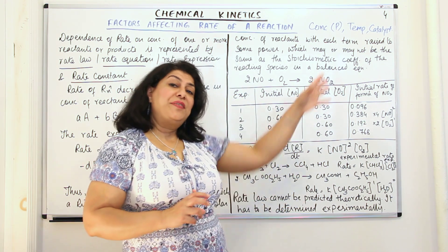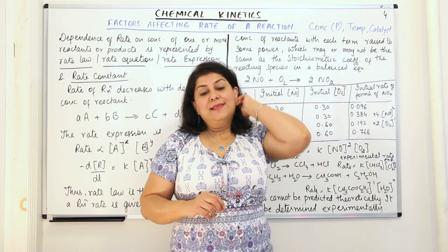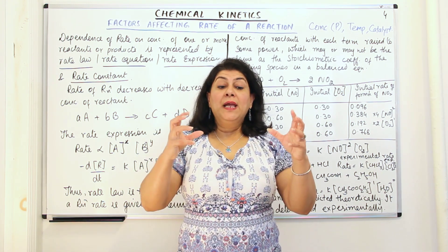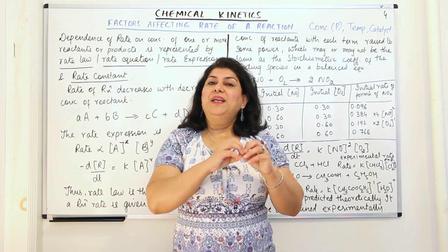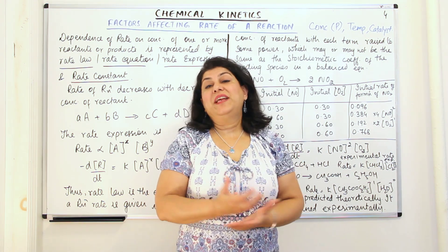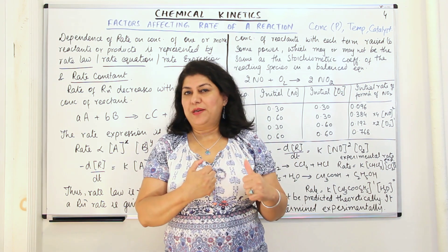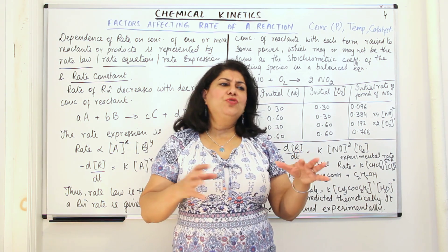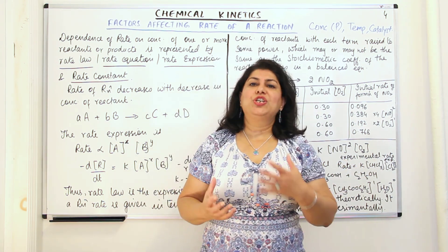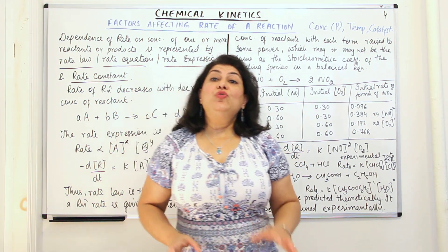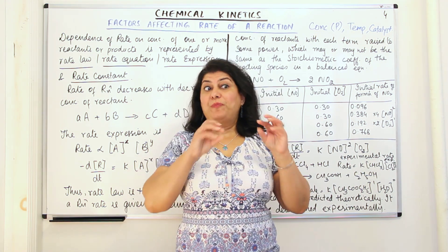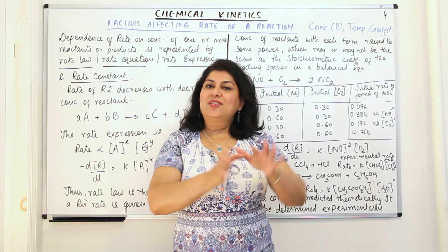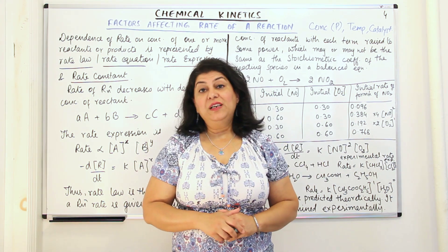The third factor is the presence of a catalyst. A catalyst is a substance whose presence helps increase the rate of a reaction. Such a substance itself does not participate in the chemical reaction but it affects the rate of the reaction. In addition to these regular positive catalysts which increase the rate of a reaction, you may also have negative catalysts which are put in order to decrease the rate of a reaction. So the presence of a catalyst also alters the rate of a reaction.